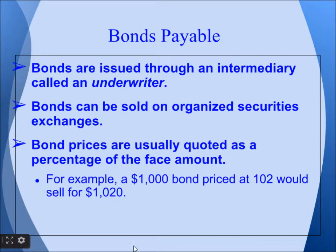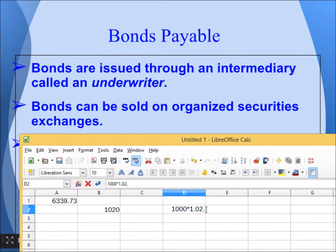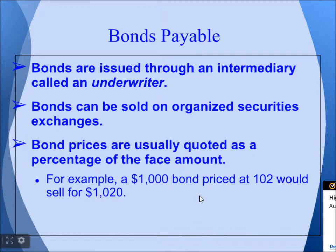If somebody says 'bond at 102,' that means it is 102% of the face value. So if the face value is $1,000 and the bond is quoted at 102, that means 1.02 times $1,000, and the bond will sell for $1,020.